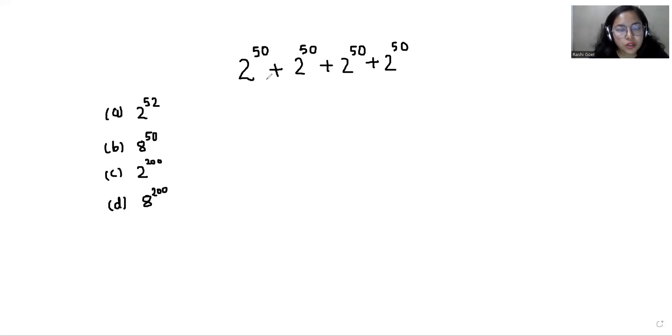So how many times is 2 power 50 written? 4 times. So I can write 4 times 2 power 50.